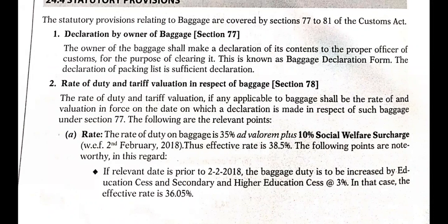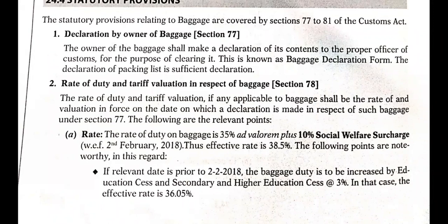If the relevant date is prior to February 2, 2018, the baggage duty was increased by education cess and secondary and higher education cess at 3 percent, making the effective rate 36.05 percent. Generally, baggage duty is 35 percent, social welfare is 10 percent, but with effect from February 2018, the effective rate is 38.5 percent.